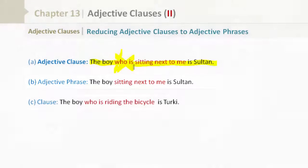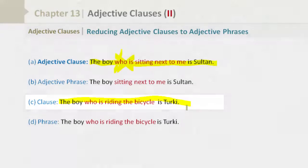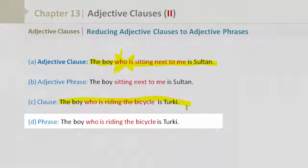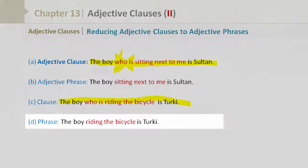Here's another clause: 'The boy who is riding the bicycle is Turkey.' Can you guess how to change this? It's pretty much the same. Now let's take a look at how to reduce this to an adjective phrase — it's pretty much the same as the previous example. 'The boy riding the bicycle is Turkey.' We also remove 'who is'.